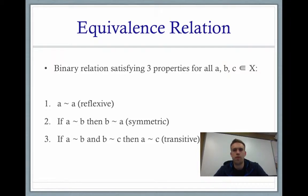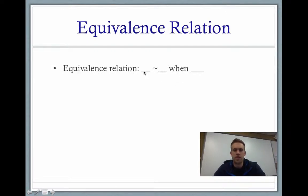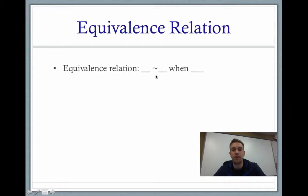So again, these are our three properties that must be satisfied in order for us to have a true equivalence relation. Equivalence relations generally appear in the form where something is equivalent to something else when a certain condition holds. We generally use the squiggly line called a tilde to indicate that two things are going to be equivalent to each other.